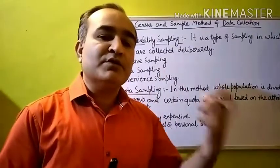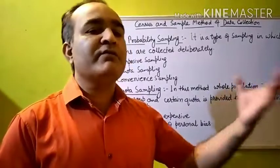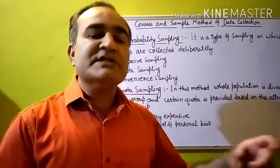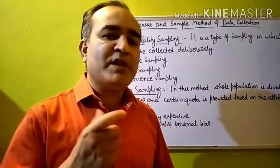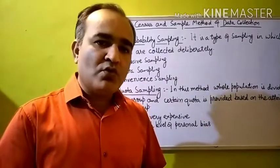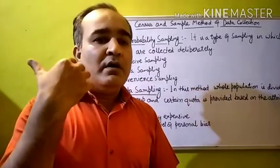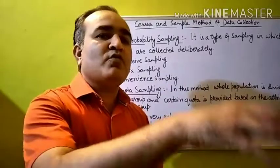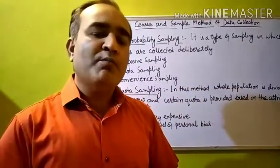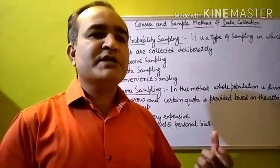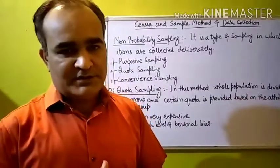Samples are picked as per the percentage of quota given to each and every group. But it is not mandatory that you pick samples in exactly that percentage. You can pick any number of samples. So quota sampling is a method in which the whole universe is divided into different groups on a certain characteristic basis, a certain percentage quota is provided to each group, and samples are picked accordingly — though the exact percentage is not mandatory.